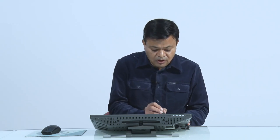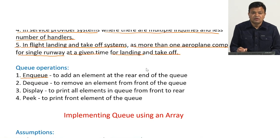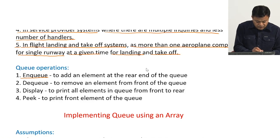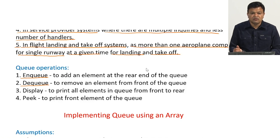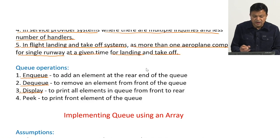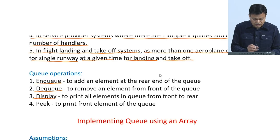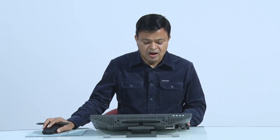Now let us discuss queue operations — what operations can be performed on a queue. The first operation is enqueue, which means adding an element at the rear of the queue. The second is dequeue, which means removing or serving an element from the front. The third is display, which means printing the contents of the queue from front to rear without modifying it. The fourth is peek, which means printing the value of the front element. Now we will discuss algorithms to implement these operations.